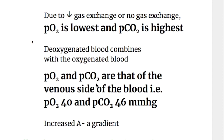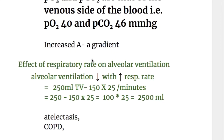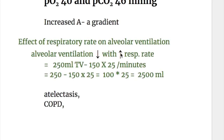In shunt, PO2 and PCO2 are those of the venous side of the blood — that is, PO2 is 40 and PCO2 is 46 mmHg. There is an increase in the alveolar-arterial gradient, that is, an increase in the difference between alveolar and arterial pressures.